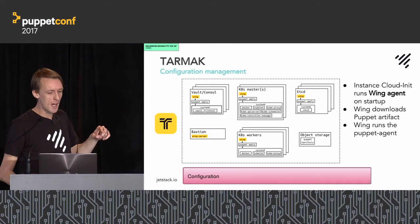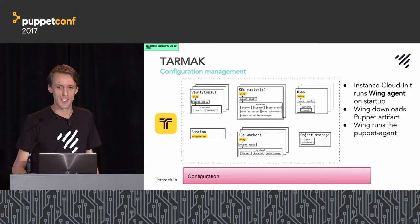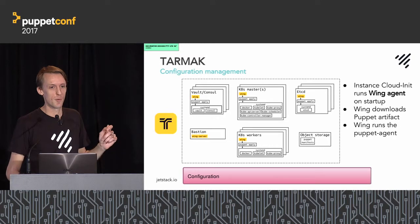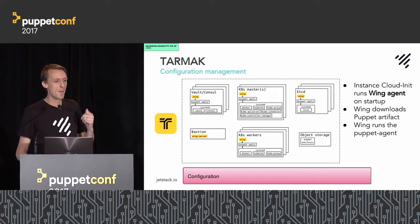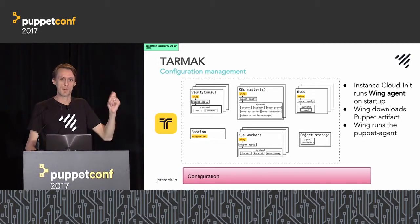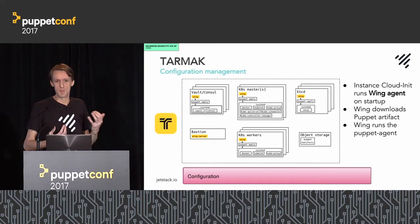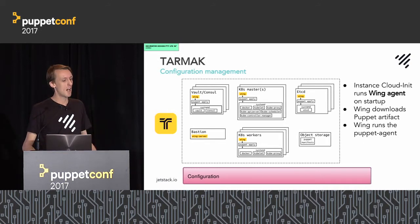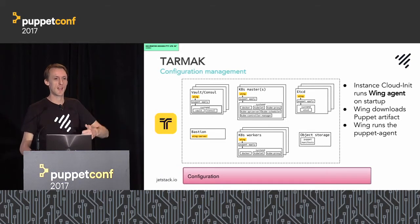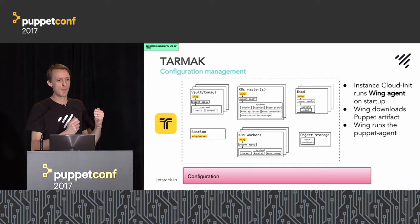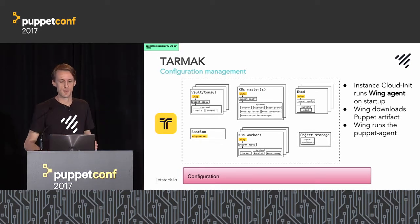Once the infrastructure is stood up, configuration needs to kick in. Here at PuppetConf, we're using Puppet. We use something called the Wing Agent — a very small binary that sits on each node. On startup it obtains the Puppet Manifest artifact from object storage, and based on the machine's role it works out precisely what that machine needs to run. Wing essentially wraps the Puppet Agent, and we use Puppet Agent for convergence of all the various components — kubelet on the worker nodes, API server on the master nodes, etcd, Vault, Consul, and so on.